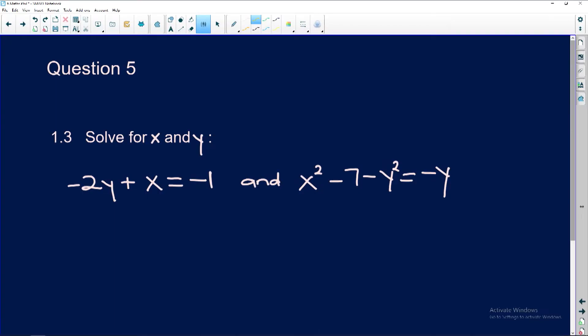It says solve for x and y. Obviously these are simultaneous equations. Guys, very important. The moment you see a squared, it means that there are going to be two answers. Just like if that was a cubed, it would be three answers.